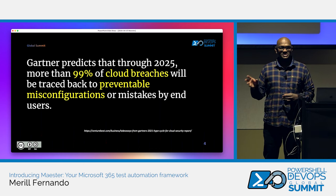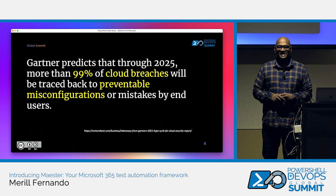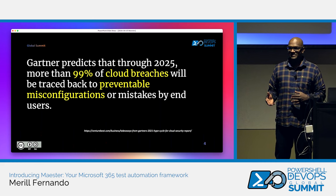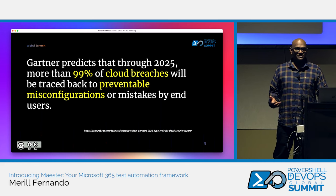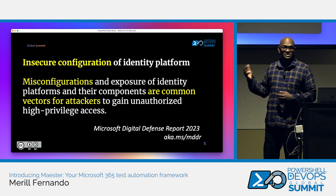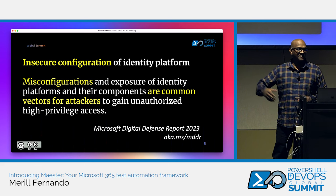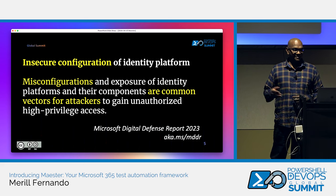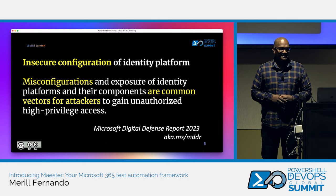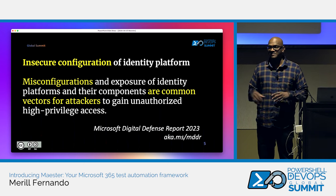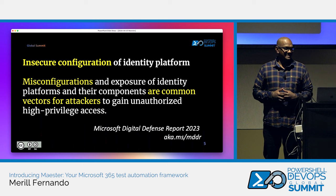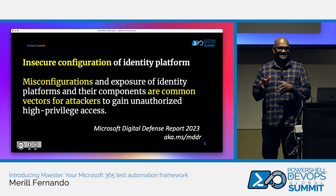If you've been following the news you'll know that's proving true. In 2024 we're seeing lots of security breaches related to misconfiguration settings, because the cloud moves so fast and there are so many settings it's becoming hard to keep up. The Microsoft Digital Defense Report, which Microsoft publishes every year, also identified misconfiguration and exposure of identity platforms as a high attack vector, specifically because identity is the gateway into the rest of the systems.